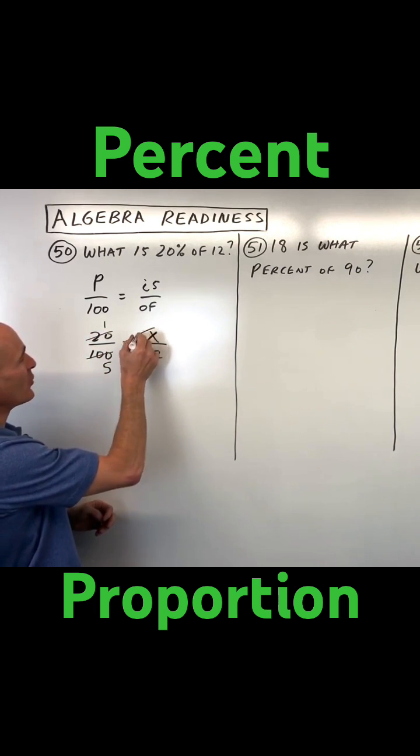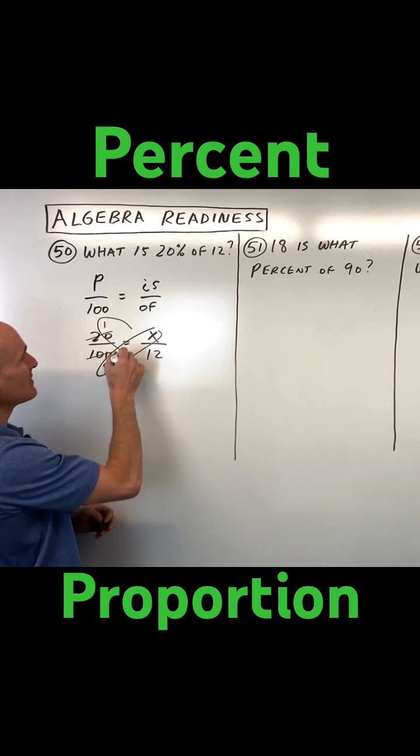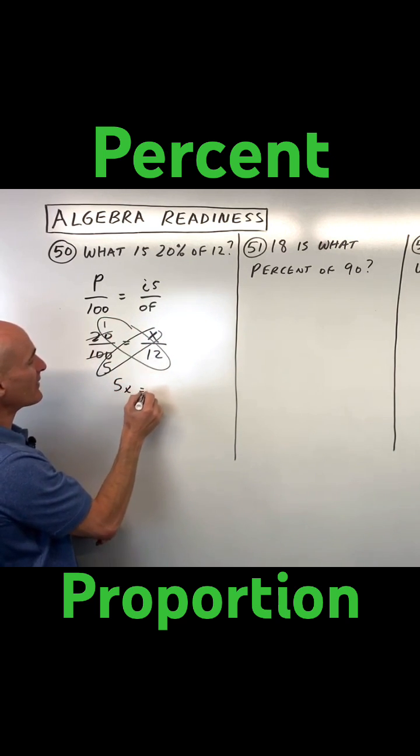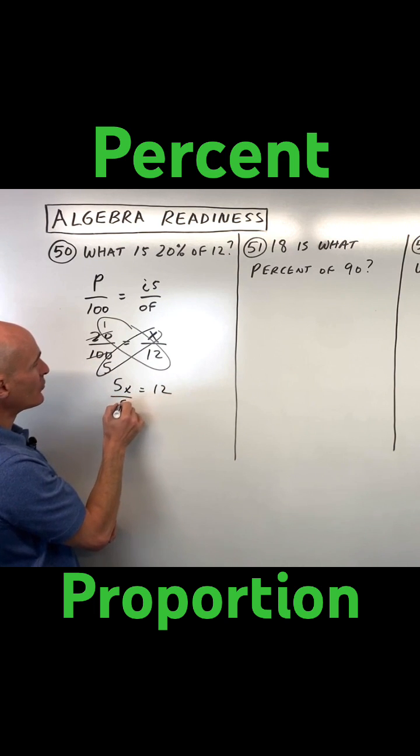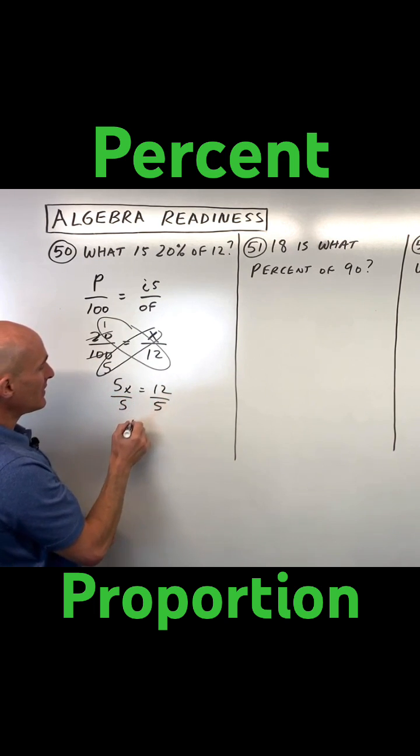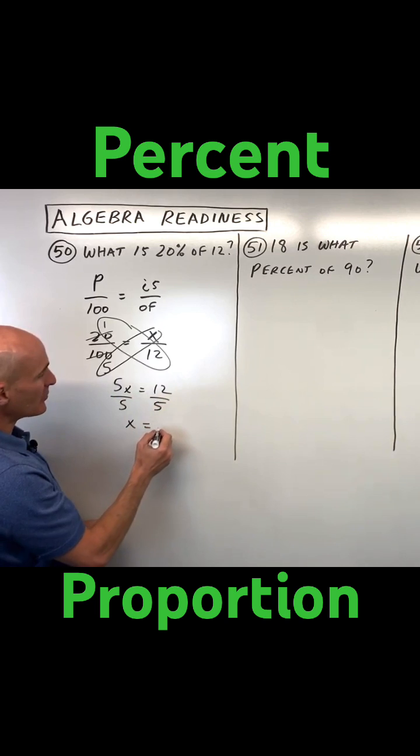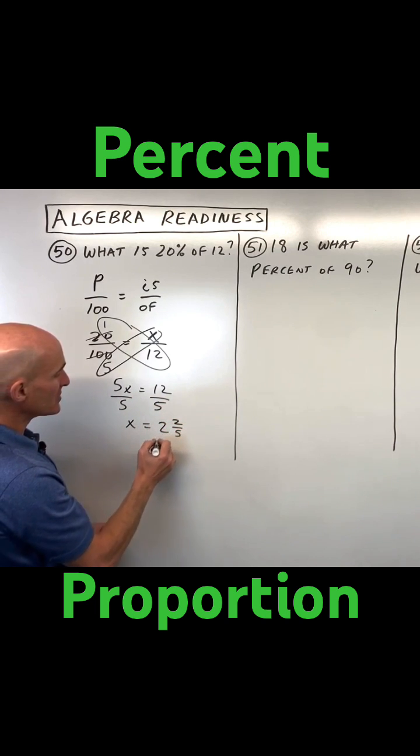So now when I cross multiply, I get 5x is equal to 12. Divide both sides by 5, and I can see that x is coming out to 2 and 2 fifths.